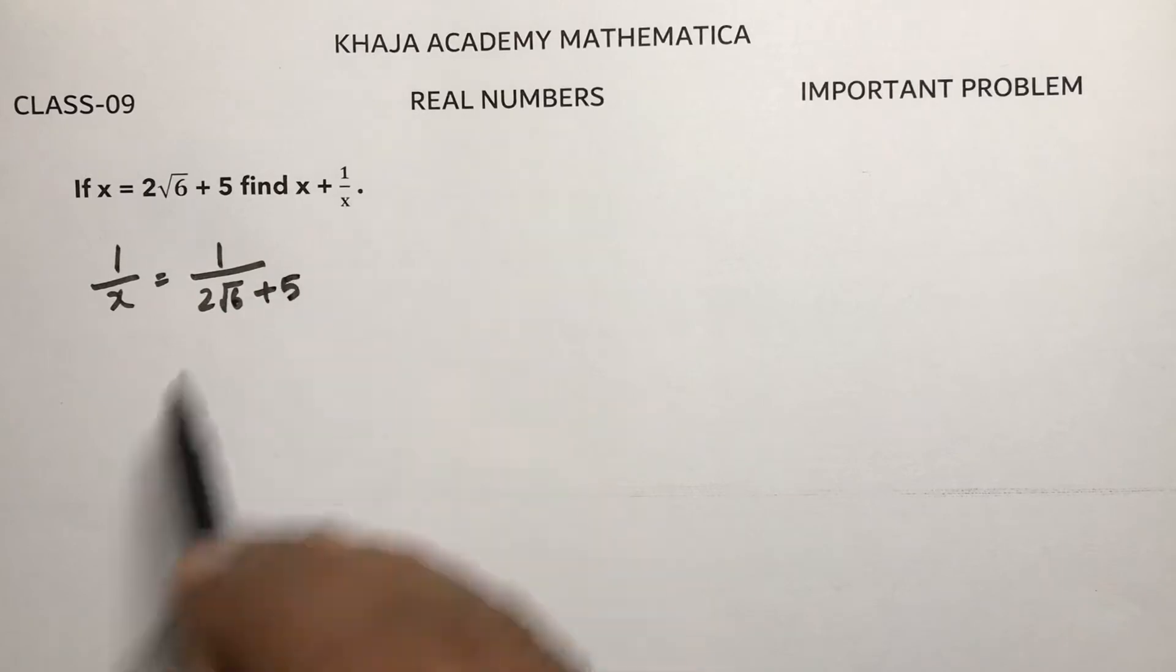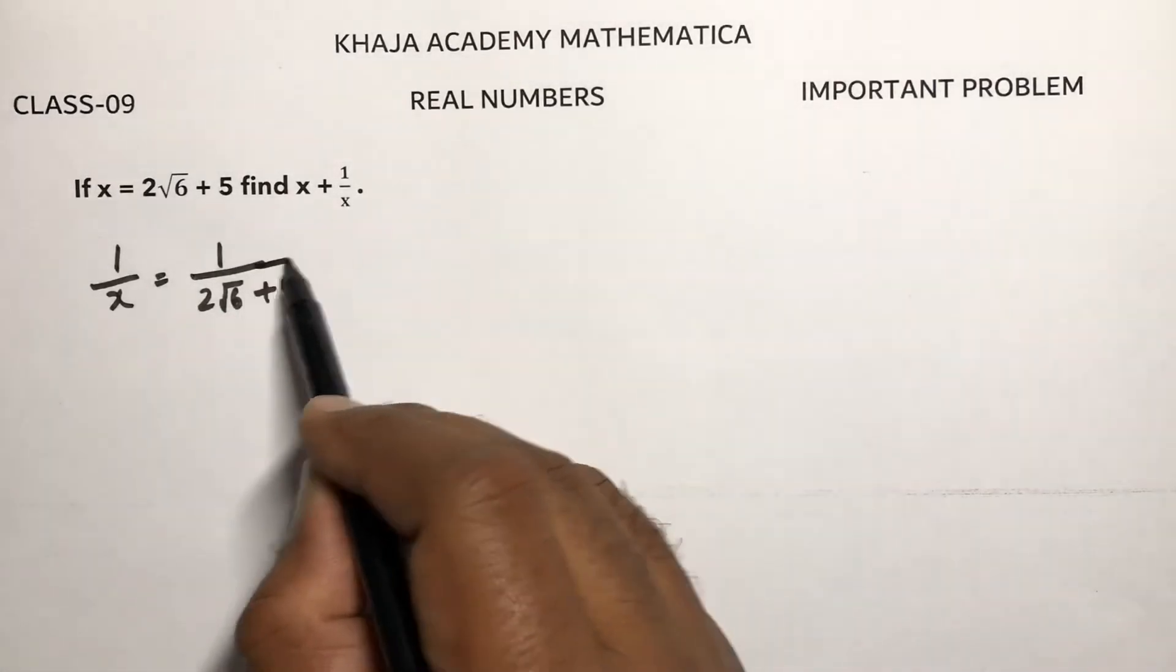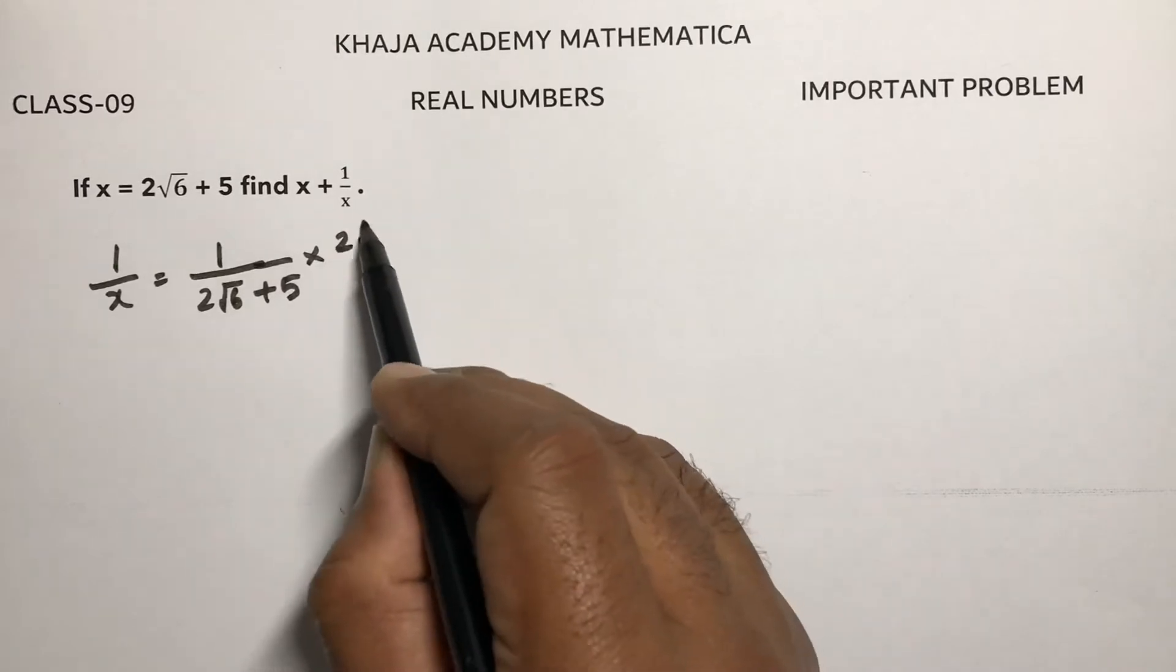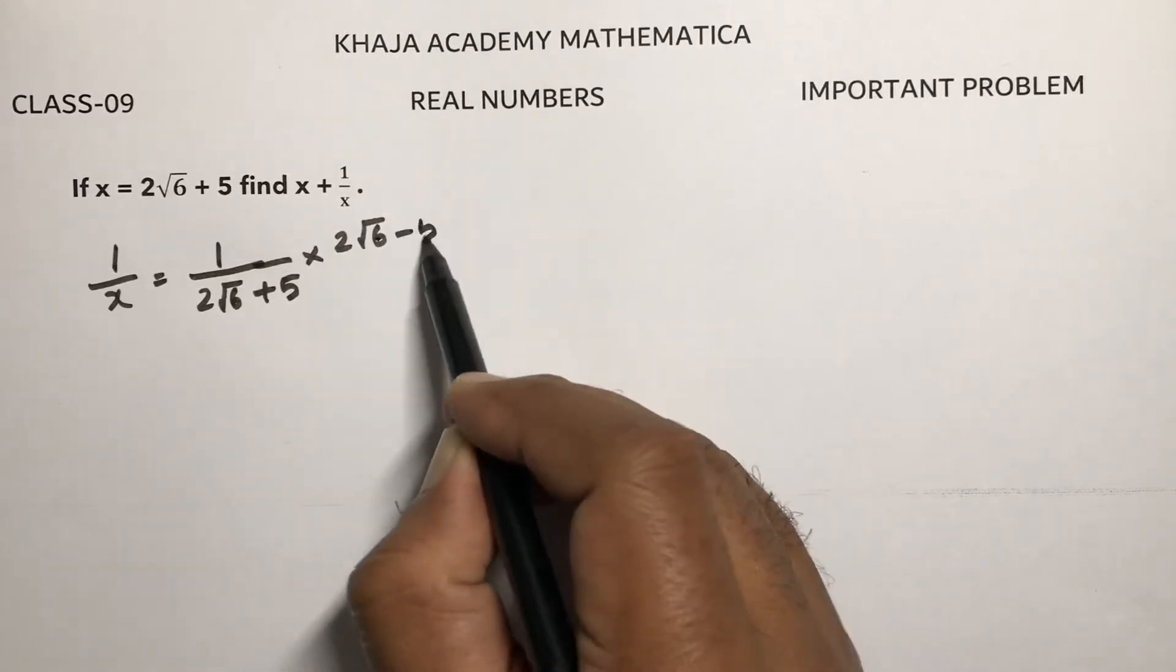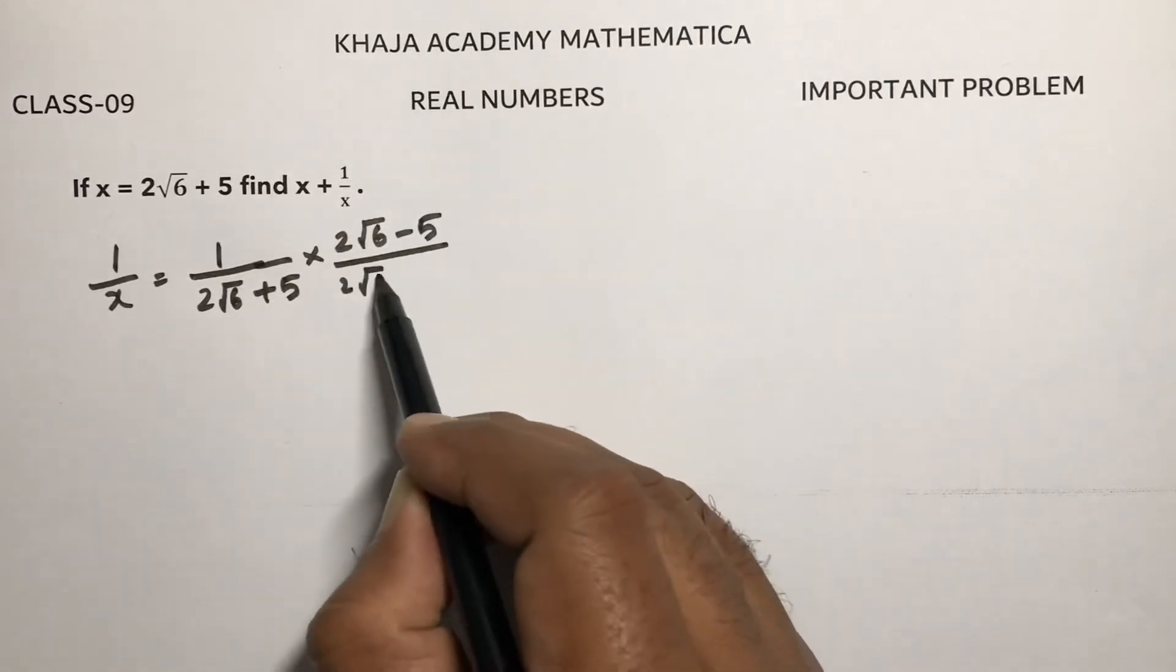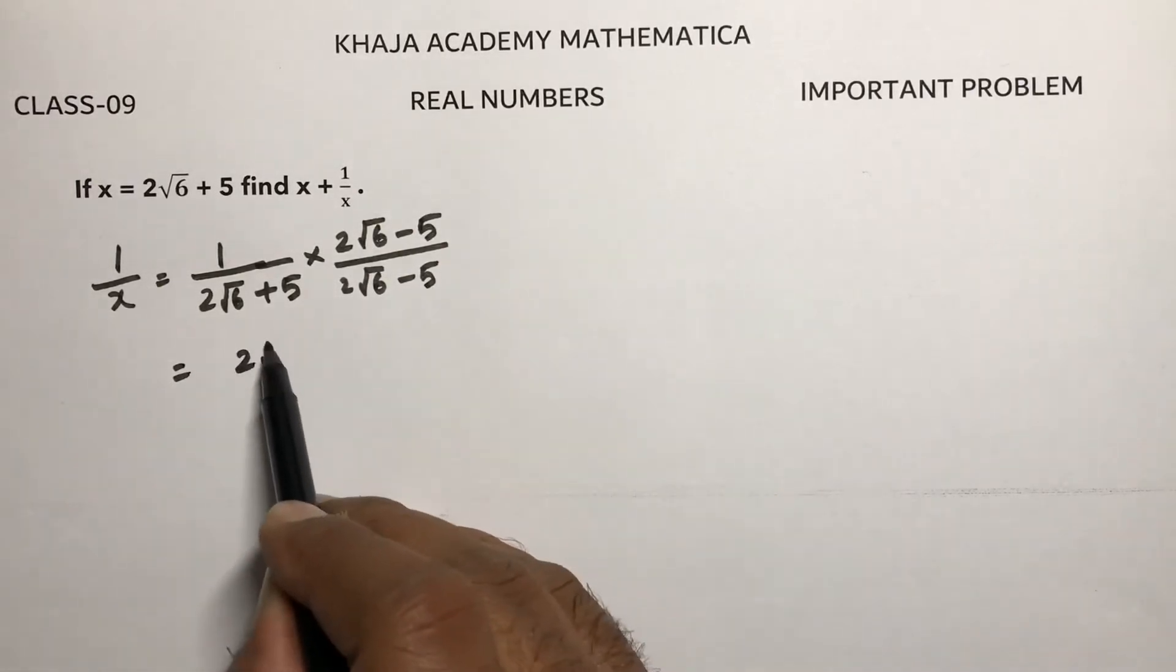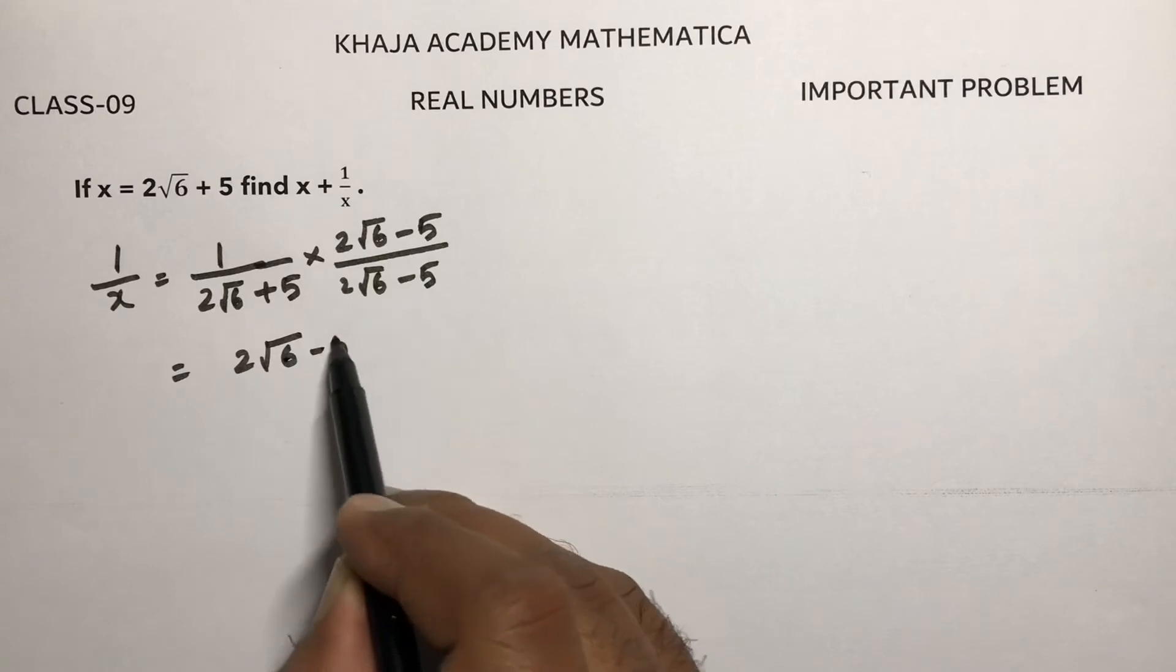And then after writing 1 by x, rationalize this part. Rationalize the denominator: 2 root 6 minus 5 by 2 root 6 minus 5. So 1 into 2 root 6 minus 5 is 2 root 6 minus 5.